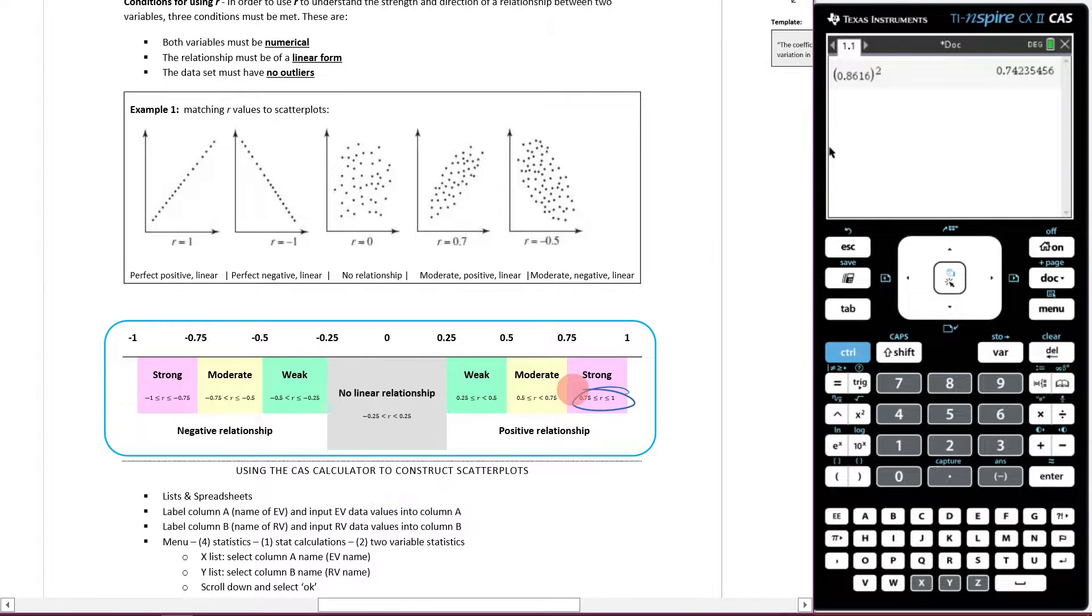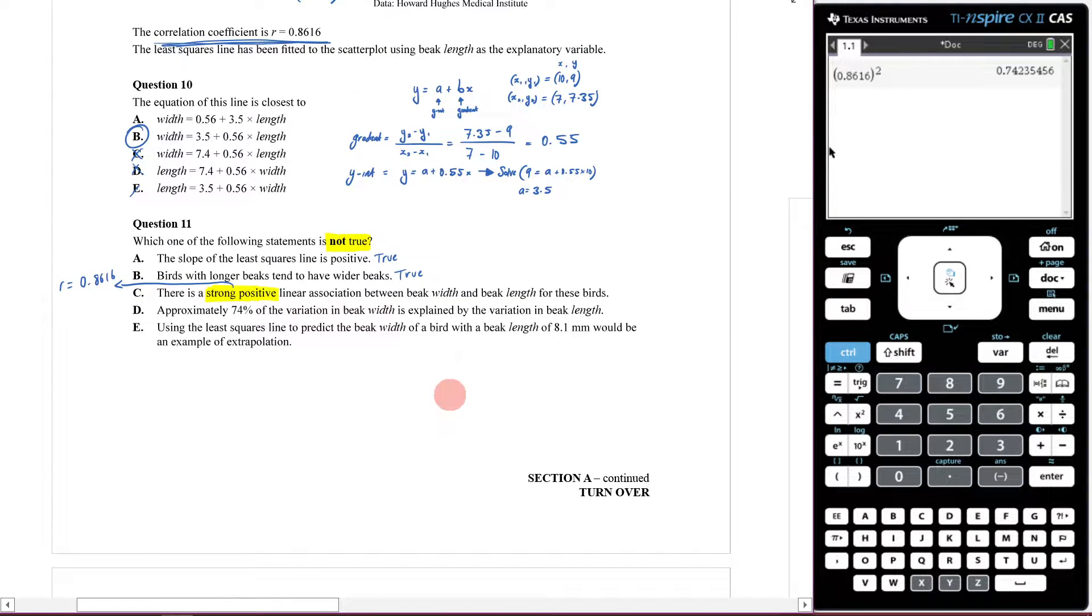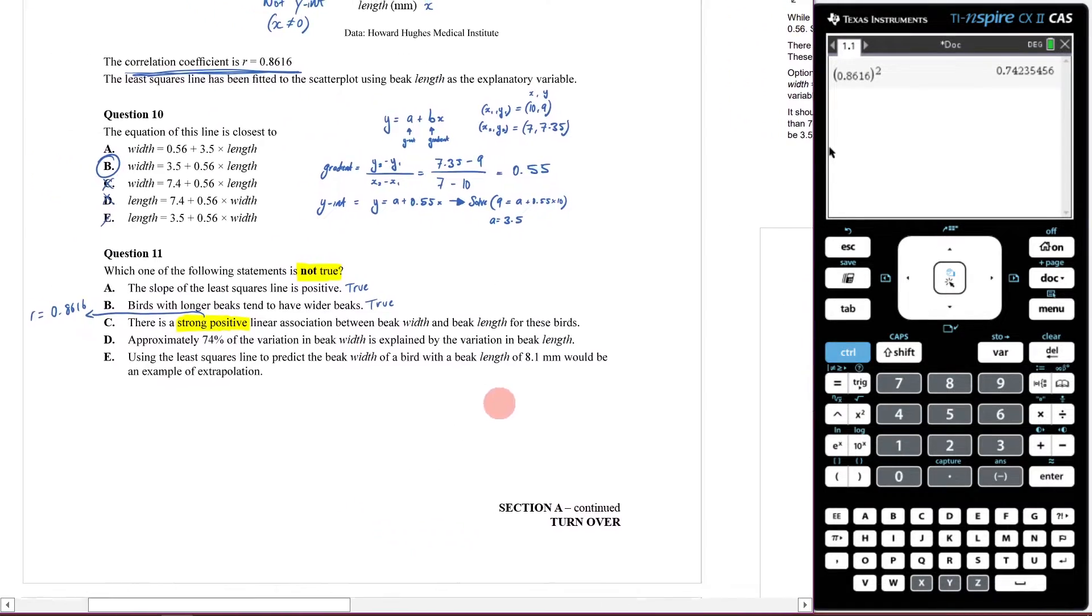Sure enough, if we come here, 0.861 is greater than 0.75, which was our lowest for this range. So that means yes, this is a strong positive linear association. That is also true.